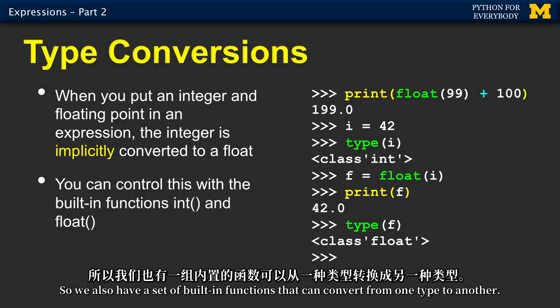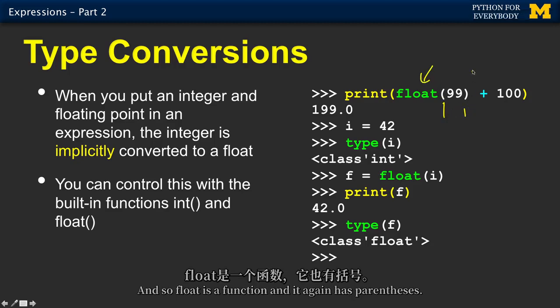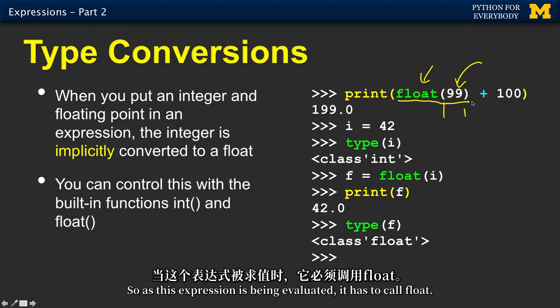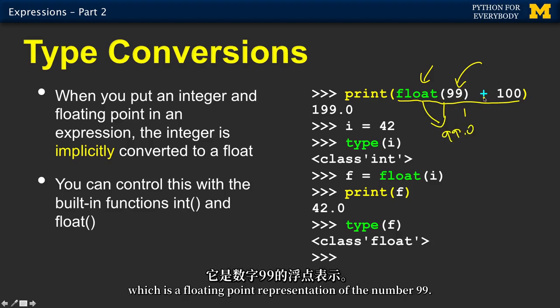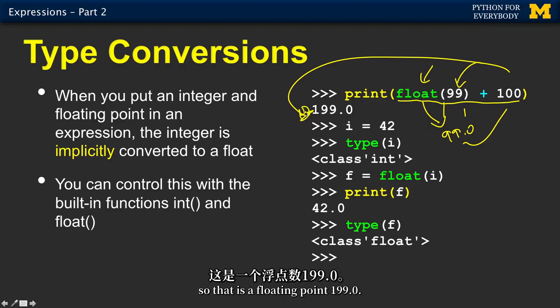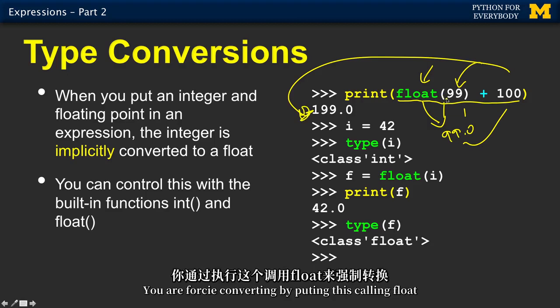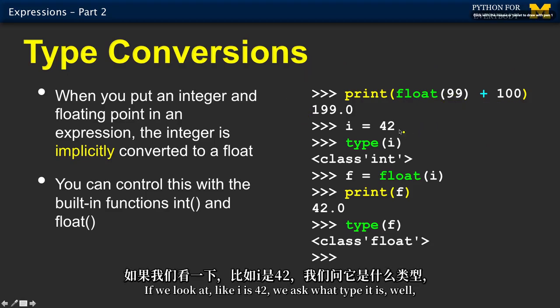So we also have a set of built-in functions that can convert from one type to another. There's float, there's int. And so float is a function. It again has parentheses. We pass in 99. So as this expression is being evaluated, it has to call float, it passes in 99, and then what comes back is 99.0, which is a floating point representation of the number 99. 99 and 99.0 are not the same. This is a floating point number. So when this addition happens, it produces 199.0. So that is a floating point 199.0. You are force converting by putting this, calling float, you are force converting that to a floating point number.